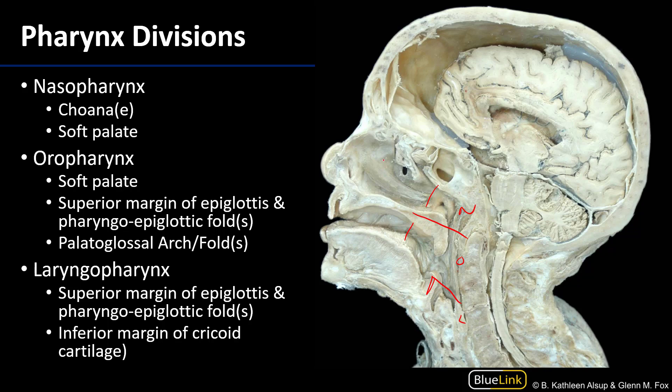Here is the right nasal cavity, and it is contiguous with the nasopharynx through the choana, plural choanae. The soft palate can form an imaginary line to form the inferior barrier between the nasopharynx and the oropharynx.